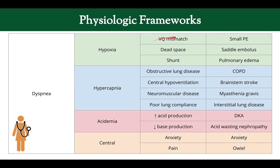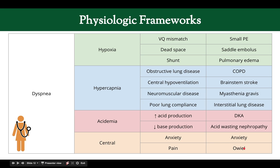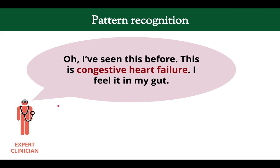With hypoxia, maybe they have a VQ mismatch, dead space, or a shunt — some possible explanations. With central causes, they may have anxiety or pain from an injury that's causing them to breathe fast. Those are examples from physiological frameworks.